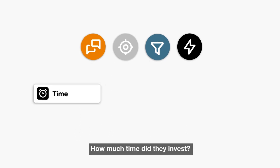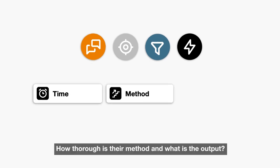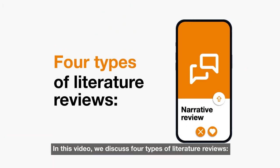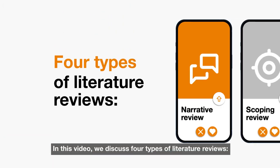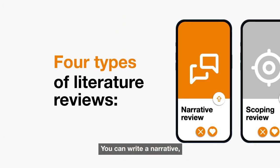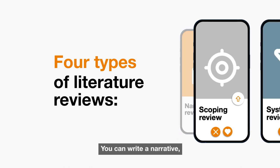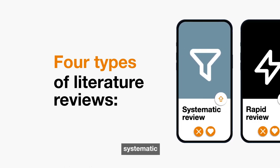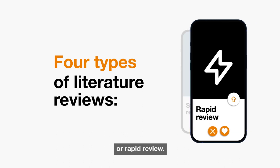How much time did they invest? How thorough is their method? And what is the output? In this video we discuss four types of literature review: narrative, scoping, systematic, or rapid review.